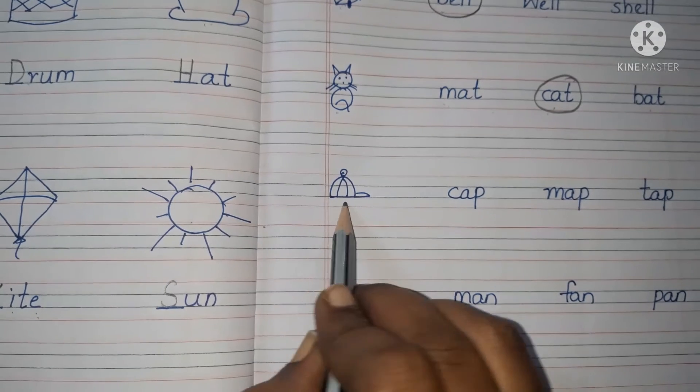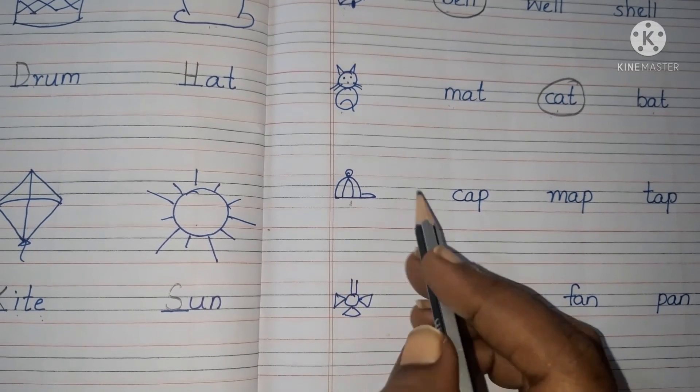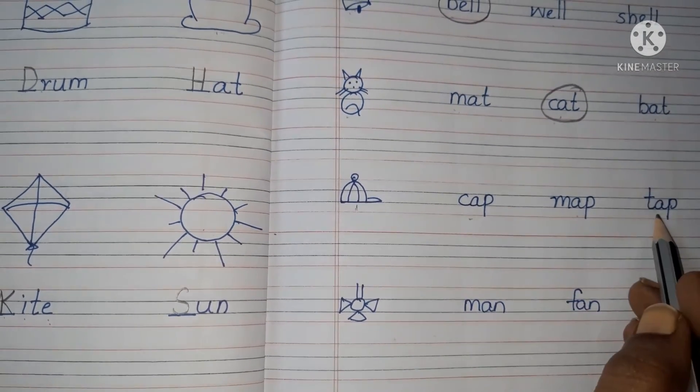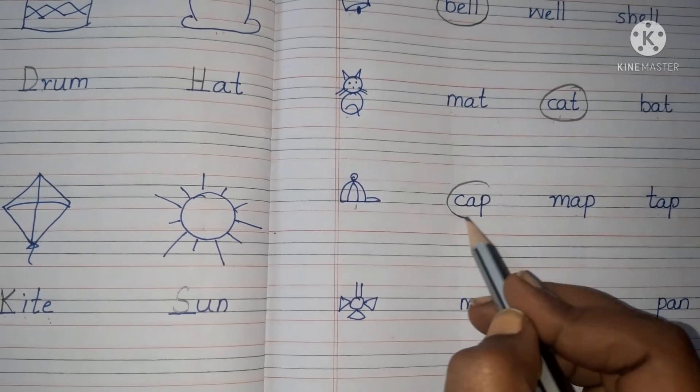Next. What is this one? Cap. Read the spellings here. C-A-P cap, M-A-P map, T-A-P tap. So the correct one is C-A-P cap.